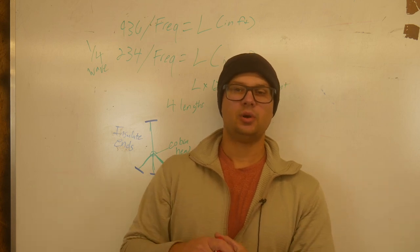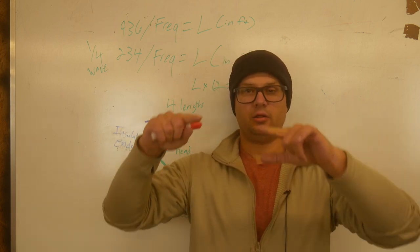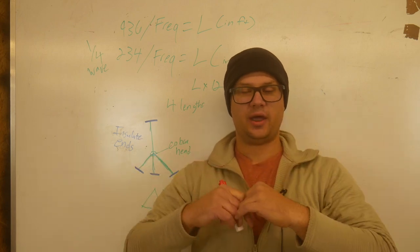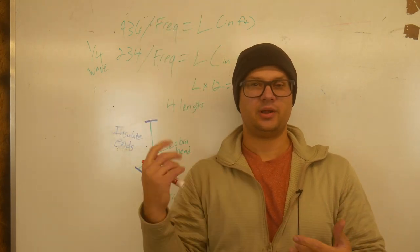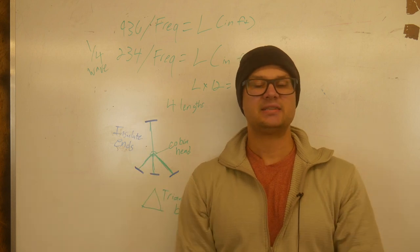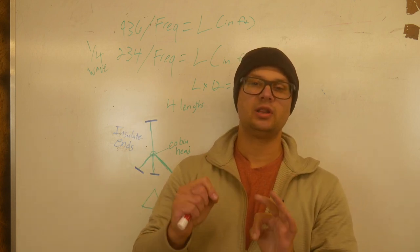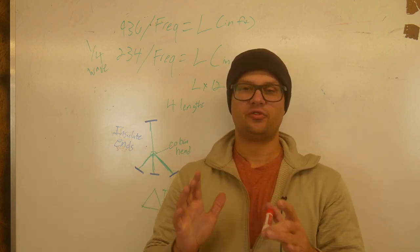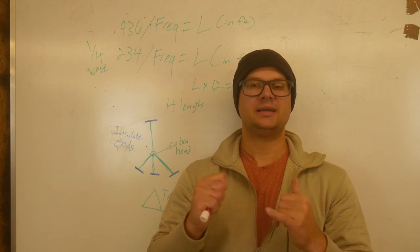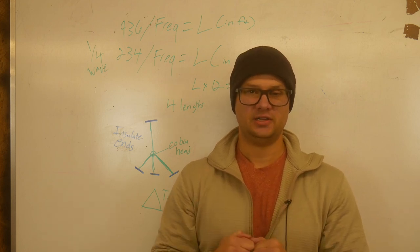Basically what we're going to do is we're going to build a triangle of three lengths of wire and then one on top and then we're going to hoist it up into a tree and connect our radio to it. That's essentially what we're doing. It's really easy. You'll need a few tools to do it.